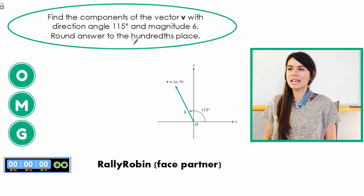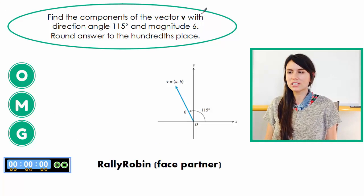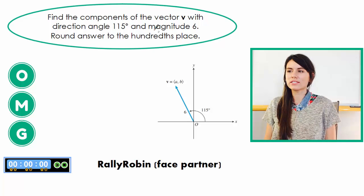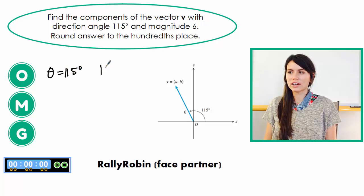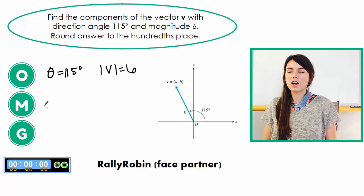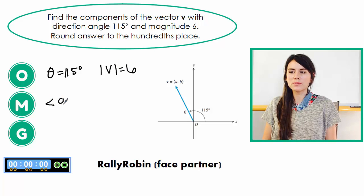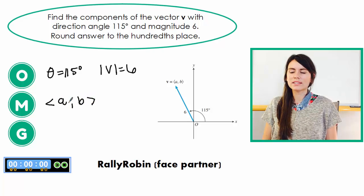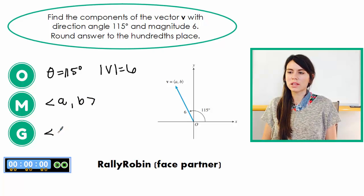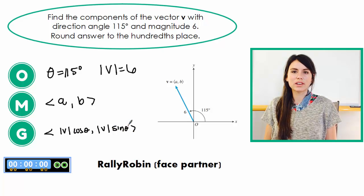So let's do this first one. It asks us to find the components of the vector and it gives us the direction angle is 115 degrees and it tells us that the magnitude is 6. So our theta is 115 and our magnitude of our vector v is 6. Our mission is to find it in component form. So component form is that these arrows or brackets a comma b. So that's what component form looks like. And then our game plan for doing that is going to be to use that formula. So take the magnitude of our vector, multiply it by cosine of our angle, and then take the magnitude of our vector and multiply it by sine of the angle. And then that's going to give us our vector.